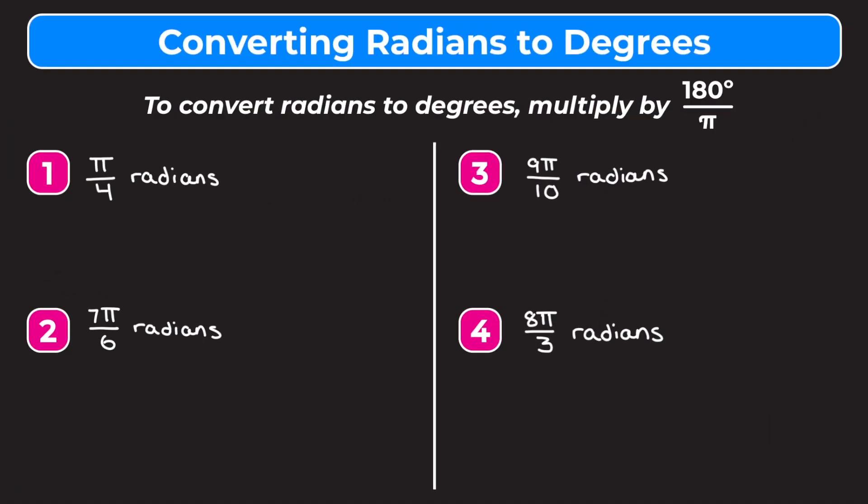In this video we're learning how to convert radians to degrees. Just a reminder that radians and degrees are both different units commonly used to measure the measure of angles. Typically you probably hear of angles measured in degrees, but radians is another unit — it's kind of similar to how you can measure distance in inches or centimeters. So let's jump into example one, which is pi over four radians.